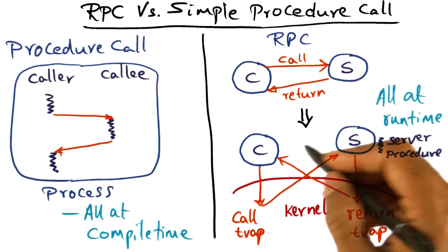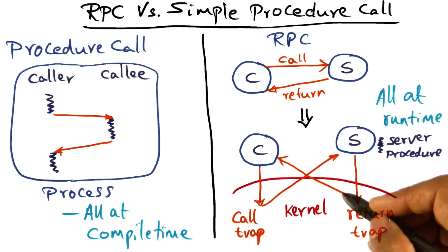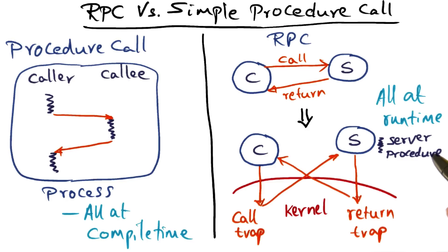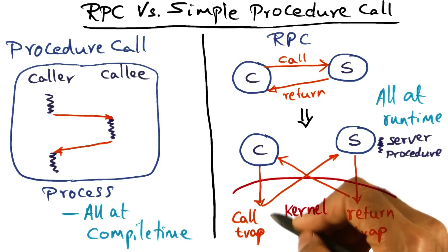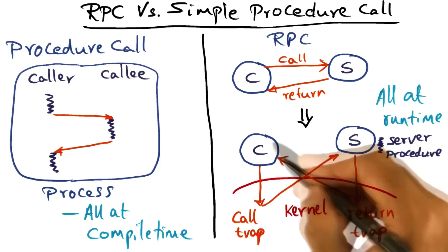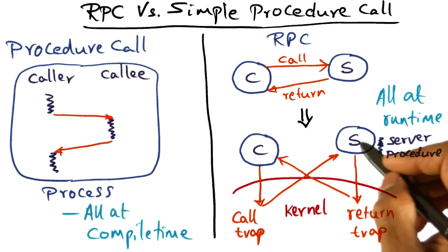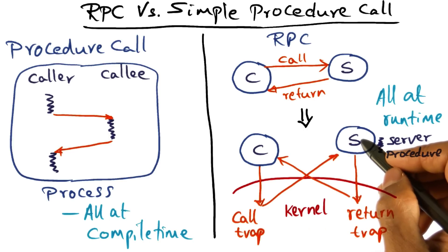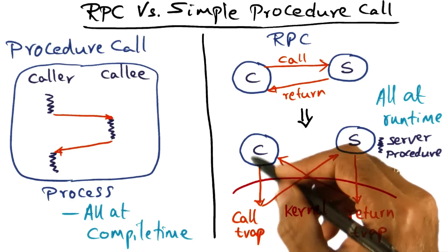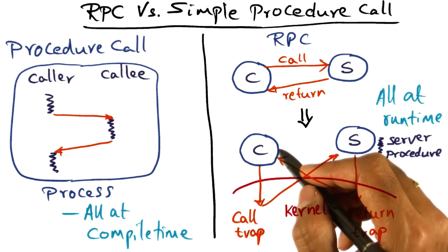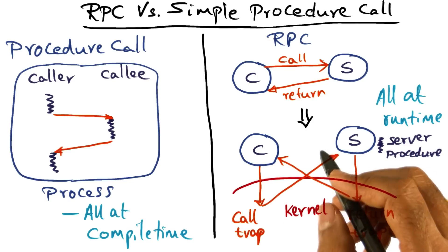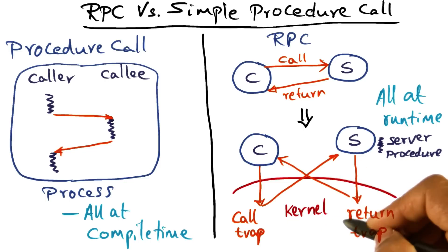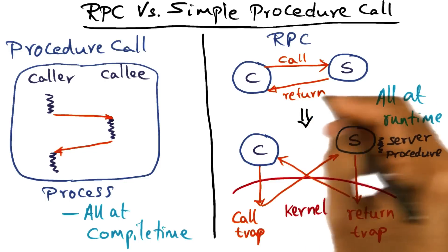That is one of the fundamental sources of performance hit that an RPC system takes — everything is being done at the time of the call. If you analyze all the overheads and work that needs to get done at runtime: there are two traps — the call trap and the return trap — and there are two context switches. The first context switch is when the kernel switches from the client to the server, and the second is when it reschedules the client after the server finishes. So: two traps, two context switches, and one procedure execution.